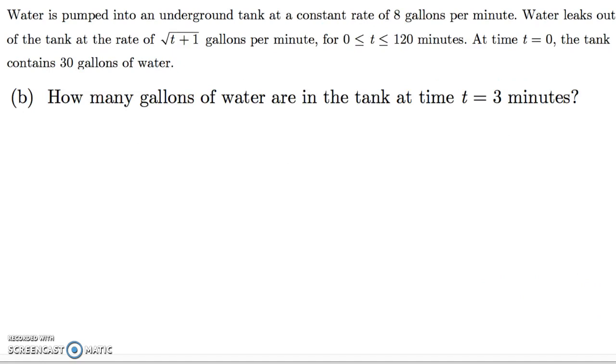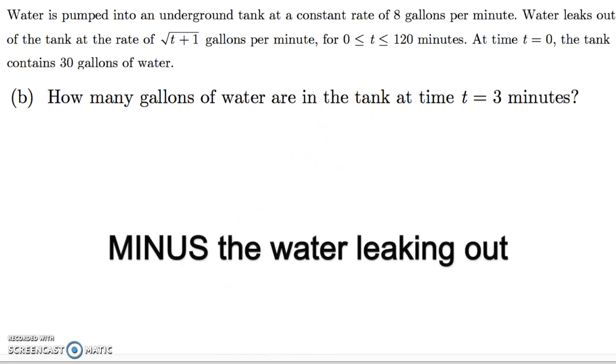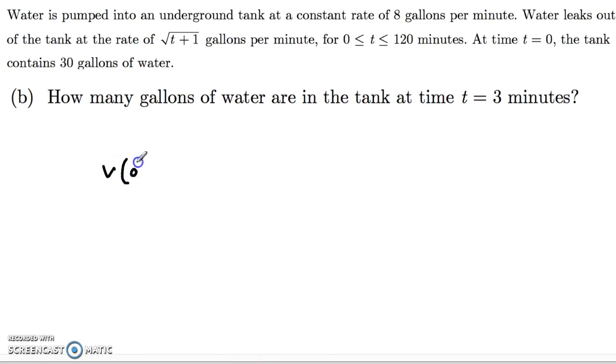Moving on to part B. So now we want to know how many gallons of water are in the tank at time t equals 3. Okay, so water in the tank is going to have to do with how much water went in the tank plus how much water was already in the tank. So remember, at 0, the volume at time 0 was already 30 gallons. So there was that initial condition of 30 gallons of water.